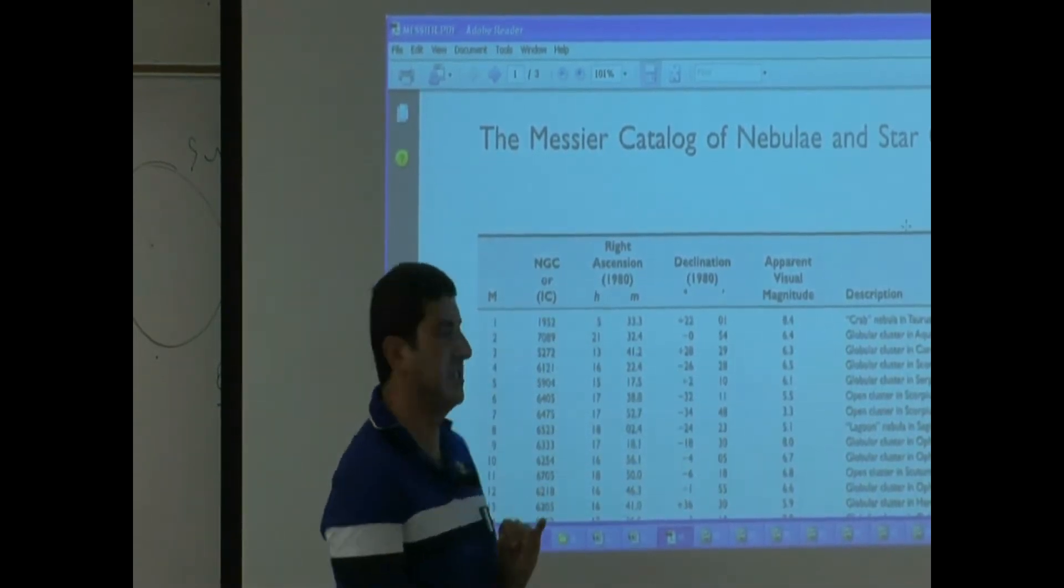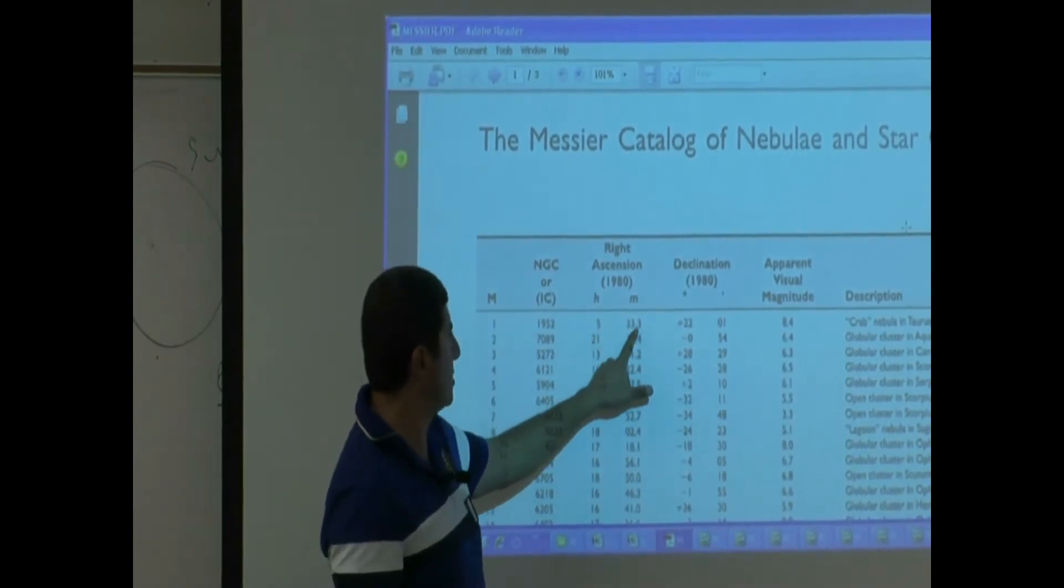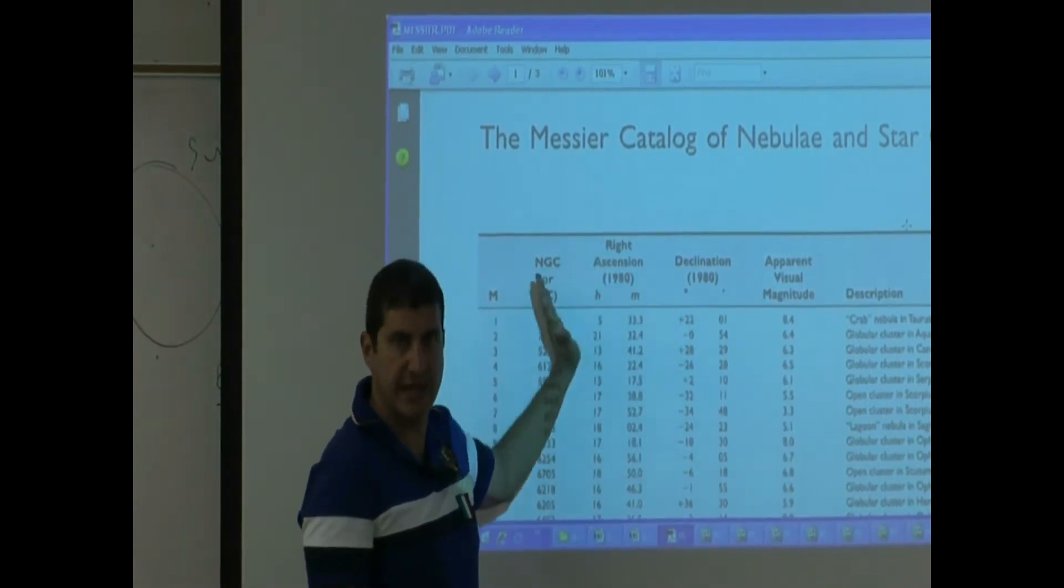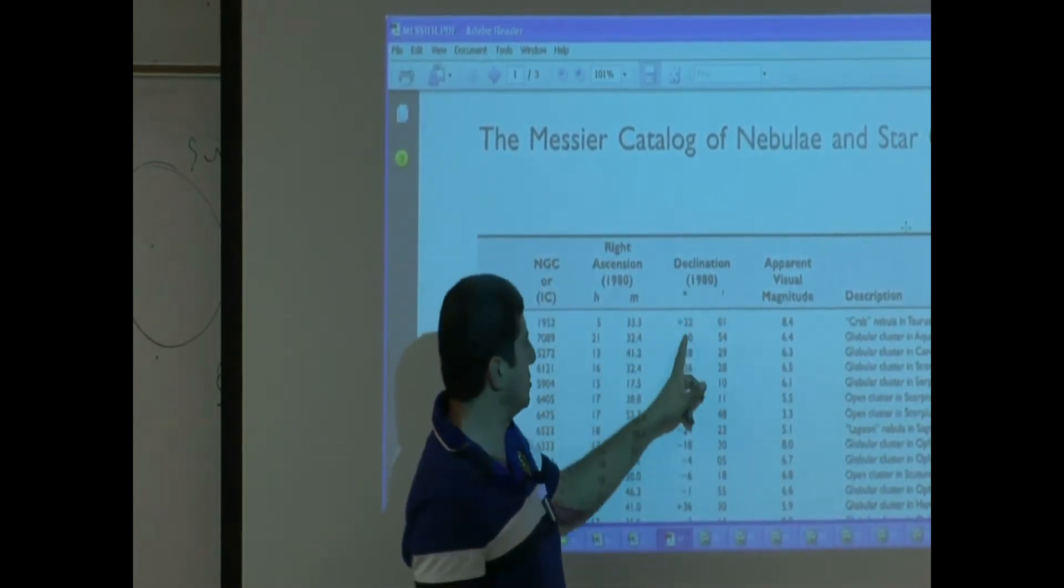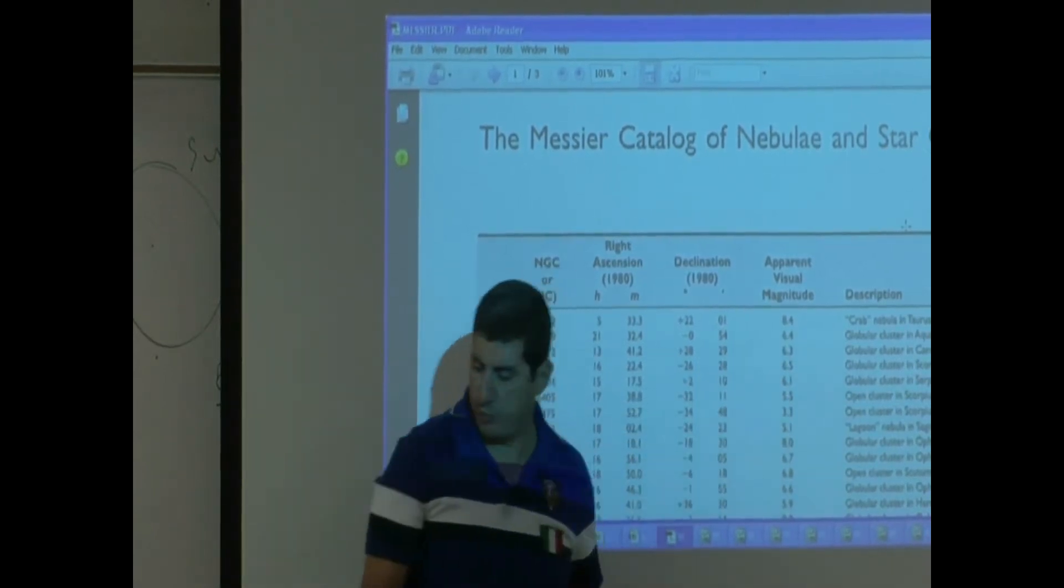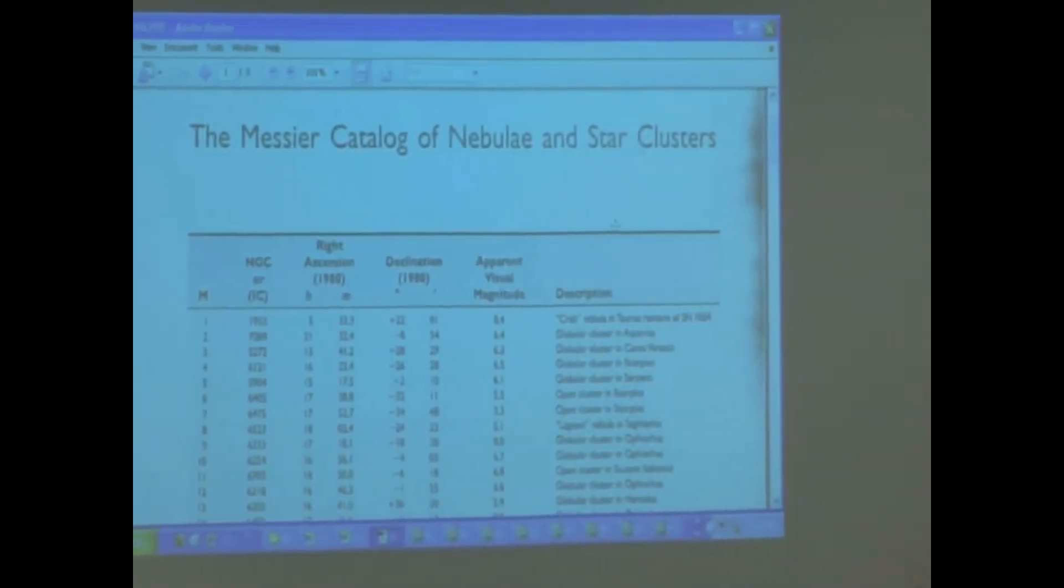What is the location of Messier object one? Five hours, 33 arc minutes right ascension, the RA angle. Declination 2201, apparent visual magnitude 8.4. So if we went to the celestial chart way back in lecture two...